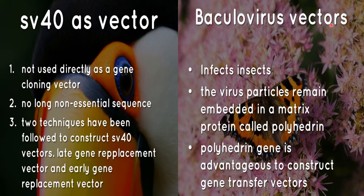Baculovirus vector infects insects, and the virus particularly remains embedded in a matrix protein called polyhedrin. The polyhedrin gene is advantageous for constructing gene transfer vectors.